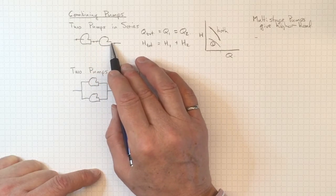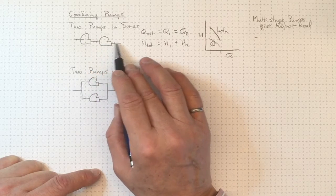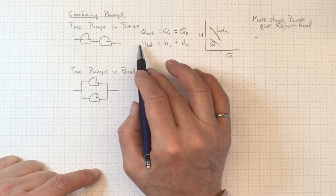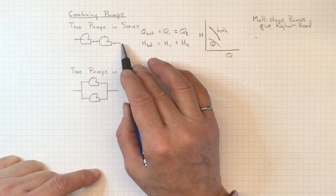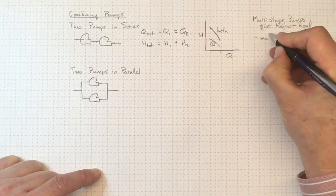With the outlet of the first impeller feeding directly into the inlet of the second impeller. And we can do that for two or three or five or ten or as many stages as we want to achieve very high heads at moderate flow rates.